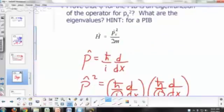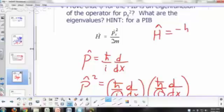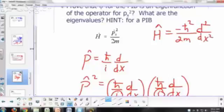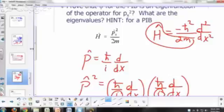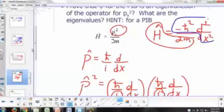Remember your Hamiltonian is just px squared over 2m, right? Hamiltonian is kinetic energy operator is negative h bar squared over 2m, second derivative with respect to x. So you can see 2 times the mass times the Hamiltonian is just your px squared operator. And this is your px squared operator right here.